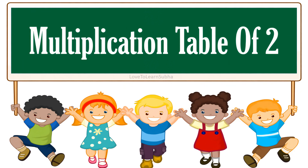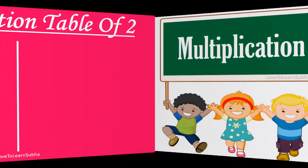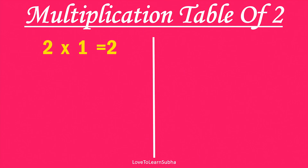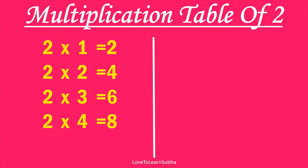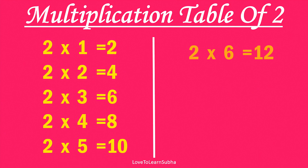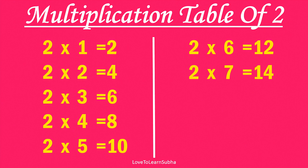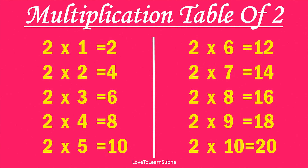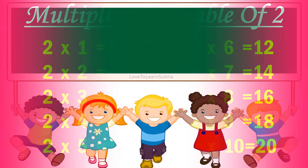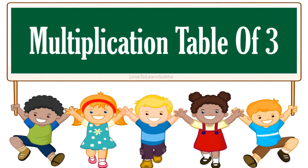Multiplication table of 2. 2×1 is 2, 2×2 is 4, 2×3 is 6, 2×4 is 8, 2×5 is 10, 2×6 is 12, 2×7 is 14, 2×8 is 16, 2×9 is 18, 2×10 is 20.